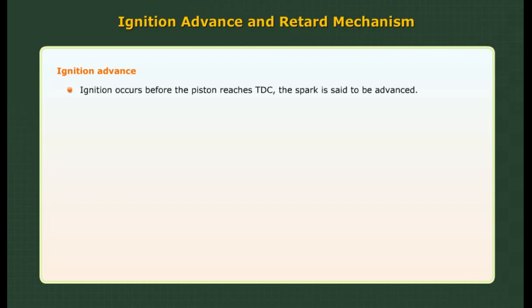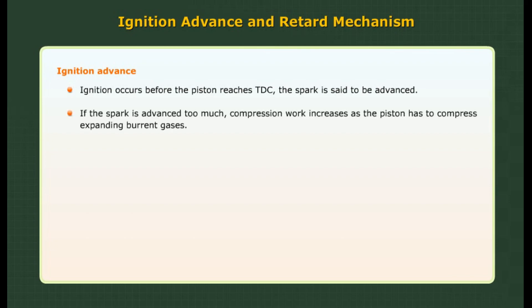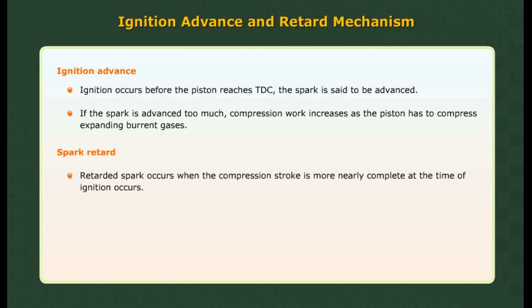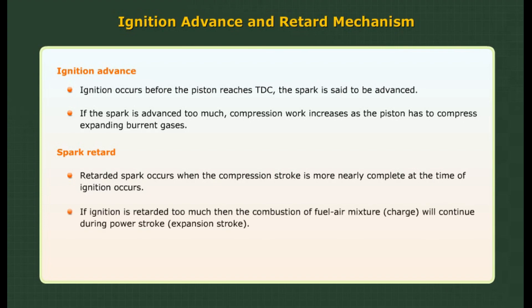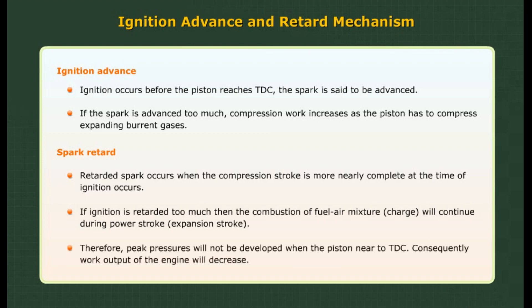Ignition advance and retard mechanism: Ignition advance occurs when ignition takes place before the piston reaches TDC. If the spark is advanced too much, compression work increases as the piston has to compress expanding burnt gases. Spark retard occurs when the compression stroke is more nearly complete at the time ignition occurs. If ignition is retarded too much, combustion of the fuel-air mixture will continue during the power stroke and expansion stroke, so peak pressures will not be developed when the piston is near TDC, and consequently the work output of the engine will decrease.